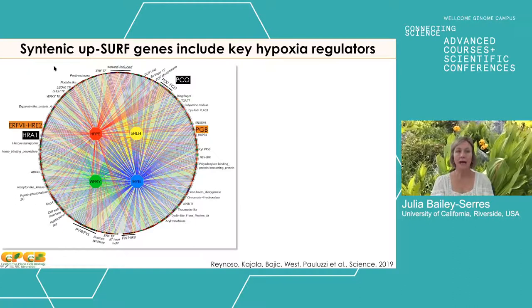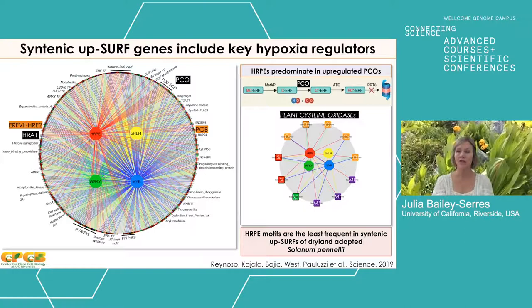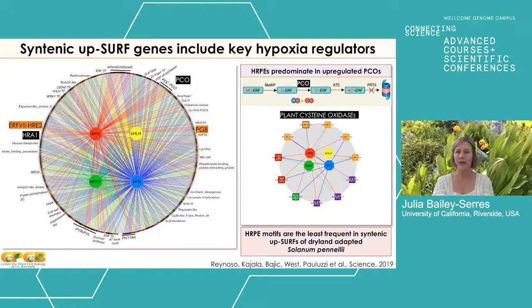We looked at the most highly conserved SERP genes across the four species and found that key regulators of hypoxia response were highly conserved and very likely controlled by HRPEs. Focusing on PCO — plant cysteine oxidase — which is key for the oxidation of the N-terminus that is then targeted for degradation, we see very strong conservation of regulation across these species with the HRPE. This is striking because not all species are submergence-adapted, likely illustrating the importance of hypoxia as a signaling component in plant development.